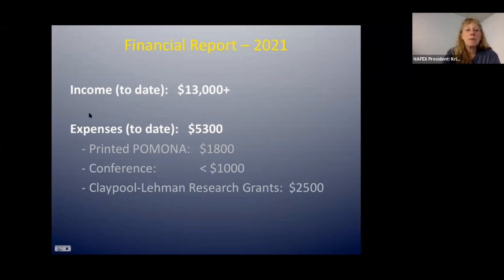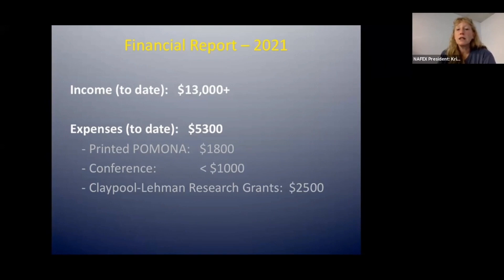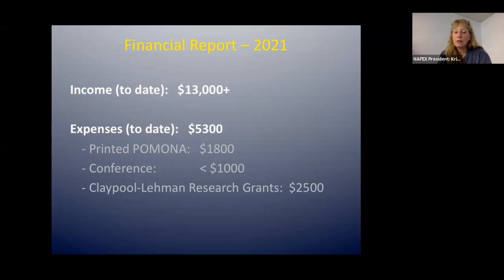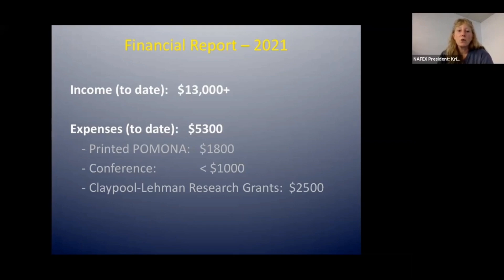The financial report to date for this year — keeping in mind we run a calendar year, January to December, and we have not finished the year. The income from membership alone, along with some donations for the conference, has been over $13,000. This does not include income from a mutual fund that I'll talk about in a moment. We will have the final numbers at the end of the year and will publish those in the Winter 2022 Pomona. Expenses to date have been around $5,300. The printed Pomona for this year has cost about $1,800. The conference we anticipate will be less than $1,000, in large part because it's virtual. We've given out close to $2,000 in research grants and will give out about $2,500 by year's end.